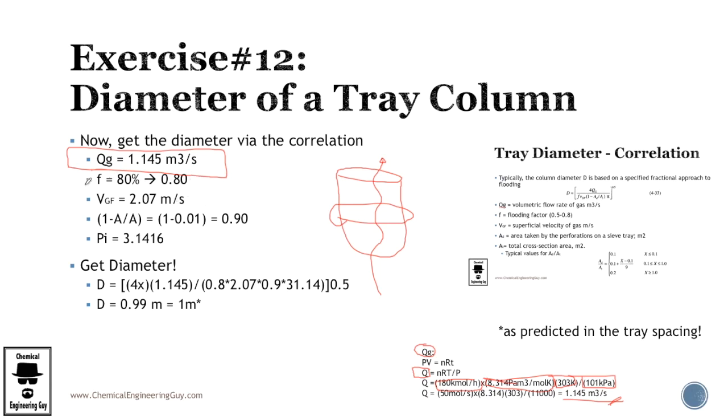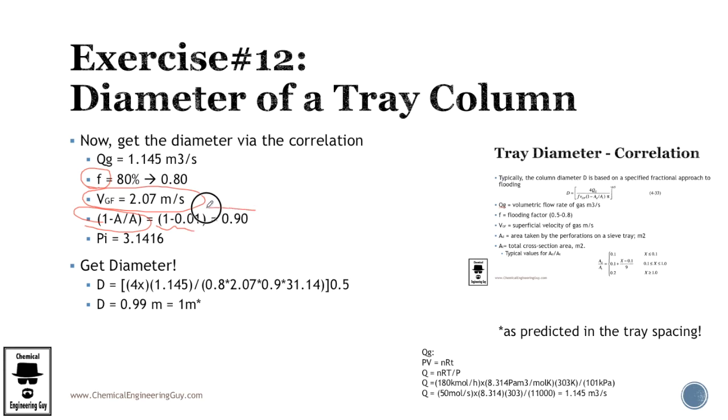Recall that we wanted to operate at 80%, at 80% flooding. So the flooding factor will be F equals 0.80. The superficial velocity was calculated already. And this factor, the AH is here. Very small. 1 minus 0.01, which is 0.90. Well, this is backwards.